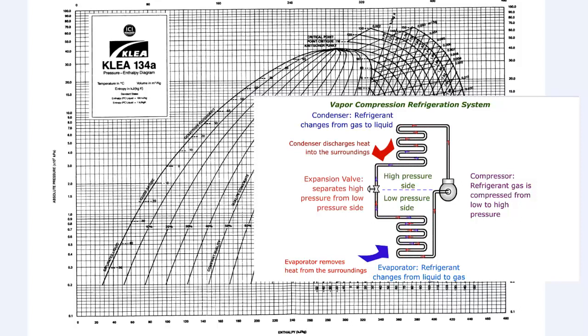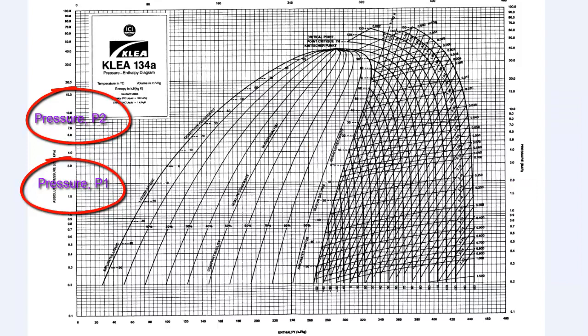Now, in any refrigeration system, there are always two pressures. One is the low pressure, and the other is the high pressure. If you happen to go to a refrigerated warehouse, and you walk over to the room where they have all the compressors and all the equipment that is being used to run the refrigeration system, you will always notice two pressure gauges. One of the pressure gauges will tell you the low pressure in the system, and the other one, the high pressure.